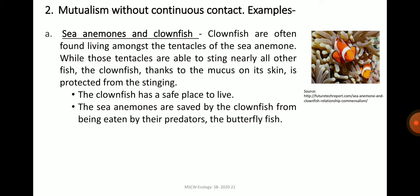The second type of mutualism is mutualism without continuous contact. The example is sea anemones and clownfish. Clownfish are often found living amongst the tentacles of sea anemones. While those tentacles are able to sting nearly all other fish, the clownfish, thanks to the mucus on its skin, is protected from the stinging. In this relationship, the clownfish has a safe place to live and the sea anemone is saved by the clownfish from being eaten by their predators, the butterfly fish.